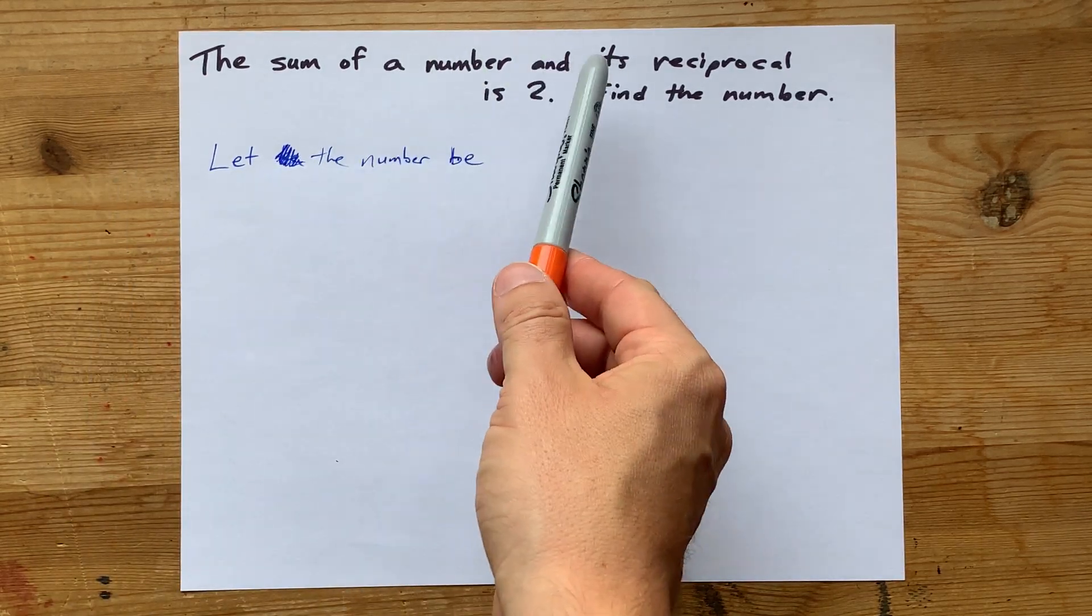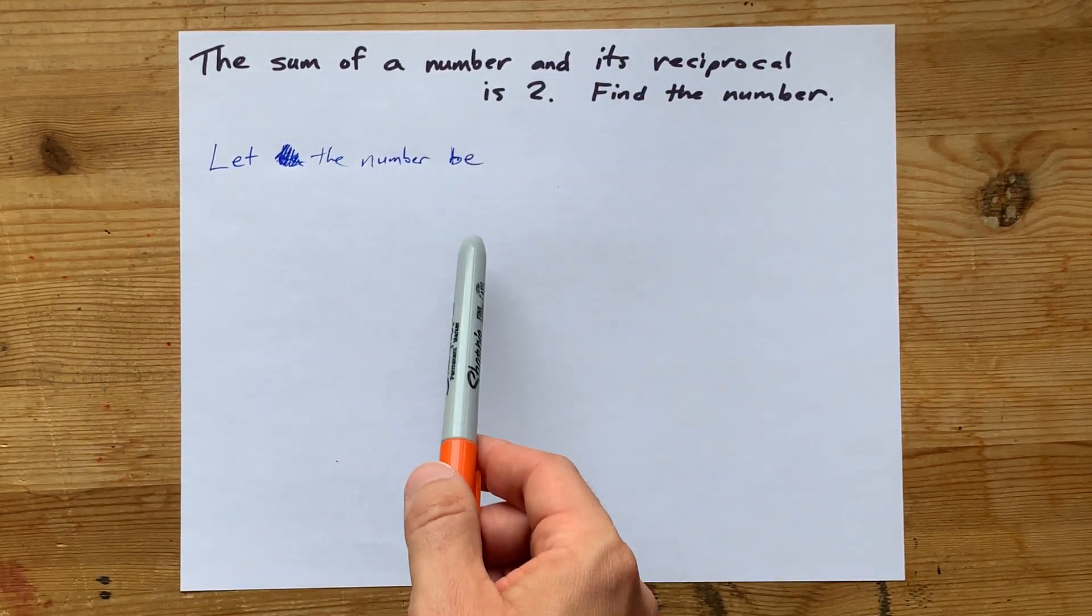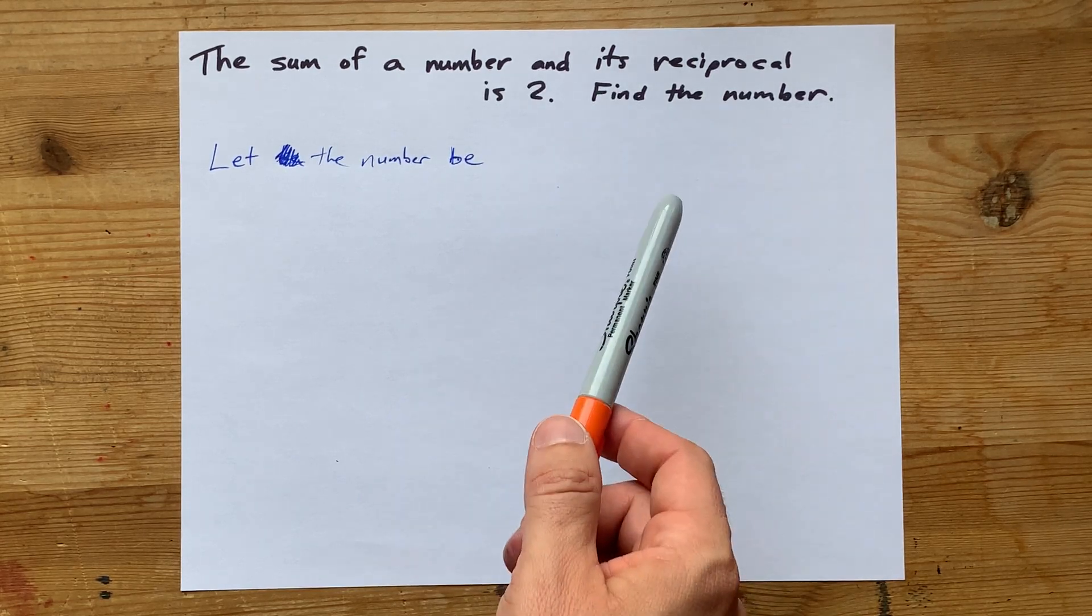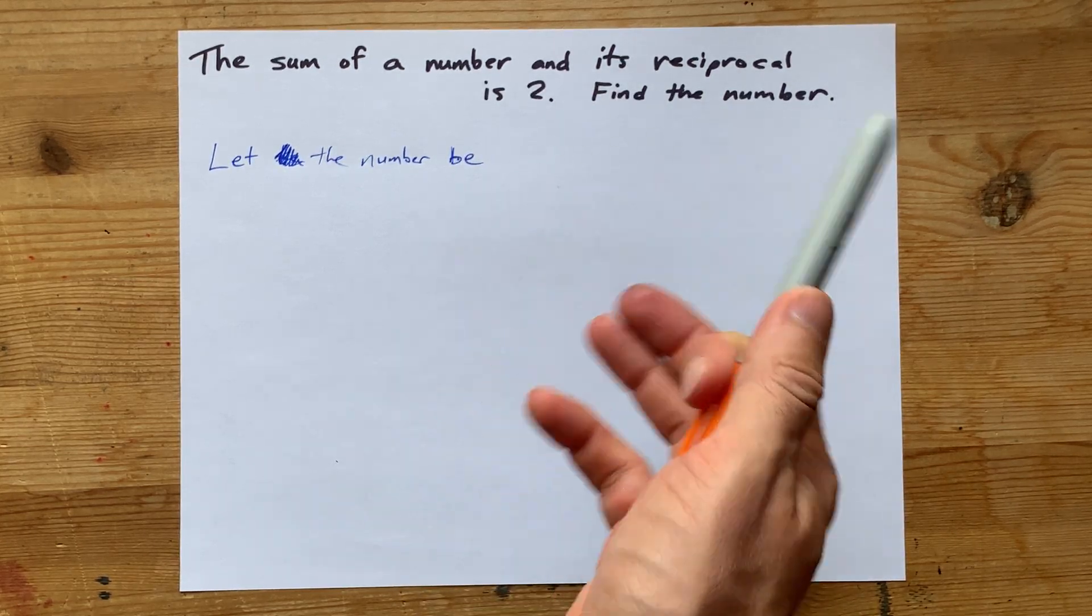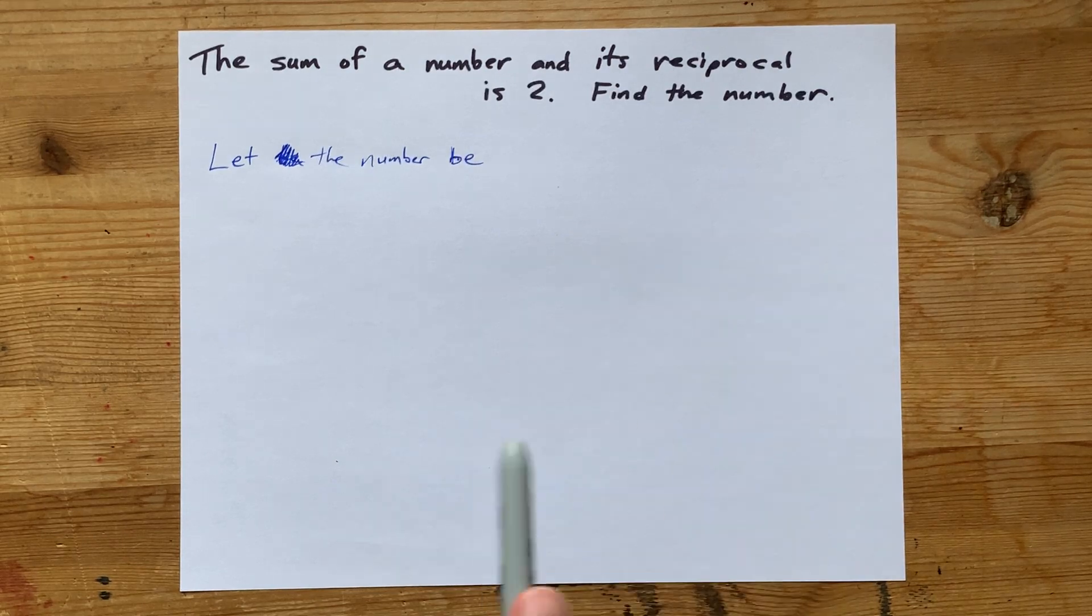The sum of a number and its reciprocal is two. We want to find the number. Now this feels more like a riddle than a math question, but we're going to use math to solve it.